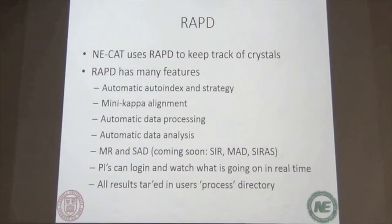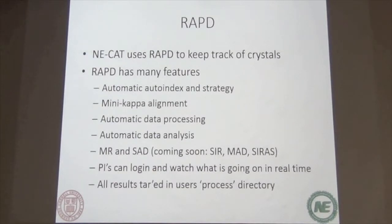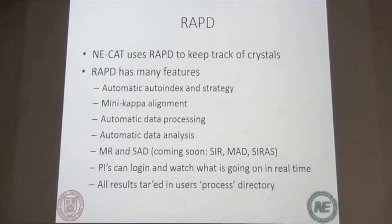RAPID does automated indexing and strategy — I'll talk about that. It does mini kappa alignment automatically, which only takes about one or two seconds. It processes the data. We have a data analysis pipeline which I use to monitor when people are collecting data, so if I see issues with crystals I can come out and help so they can hopefully solve the structure. I also wrote pipelines for molecular replacement using SHELX. SIR2, MANI, and CIRUS are already written in there, but haven't been released yet — mainly because it's not really a priority since people don't collect those kinds of data sets too much anymore.